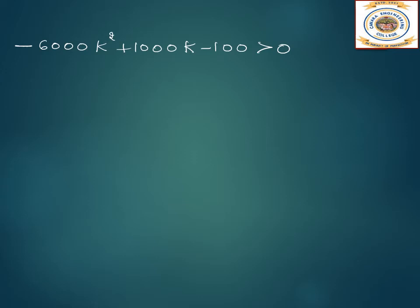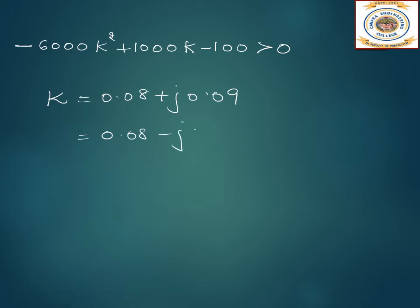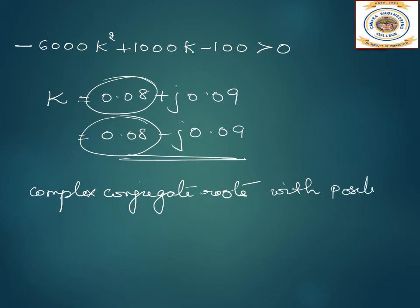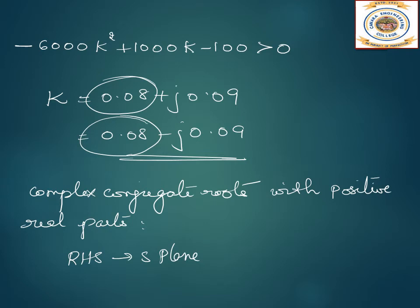Using a calculator to find the roots of −6000k² + 1000k − 100 = 0, we get k = 0.08 + j0.09 and k = 0.08 − j0.09. These are complex conjugate roots with positive real parts, meaning they lie on the right-hand side of the s-plane. Hence the system is unstable.